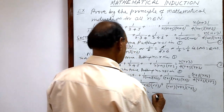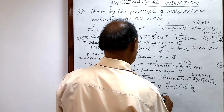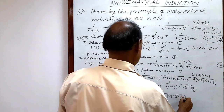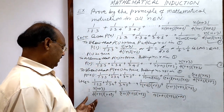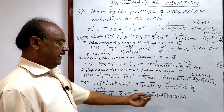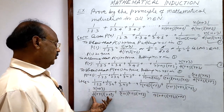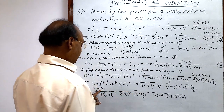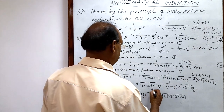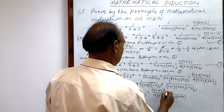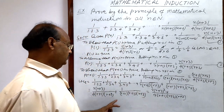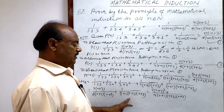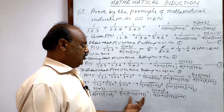The LCM is 4·(r+1)·(r+2)·(r+3). Dividing the LCM by the first denominator gives (r+3), so the first numerator becomes r(r+3)². Dividing by the second denominator gives 4, so the second numerator is 4.